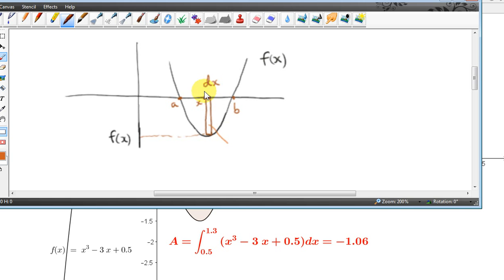So we know to get the area of a rectangle, we multiply the height f of x by the width dx. It's just that this will come out to be negative because, as you can see, the graph is below the x-axis for values of x between a and b. So f of x will be negative.